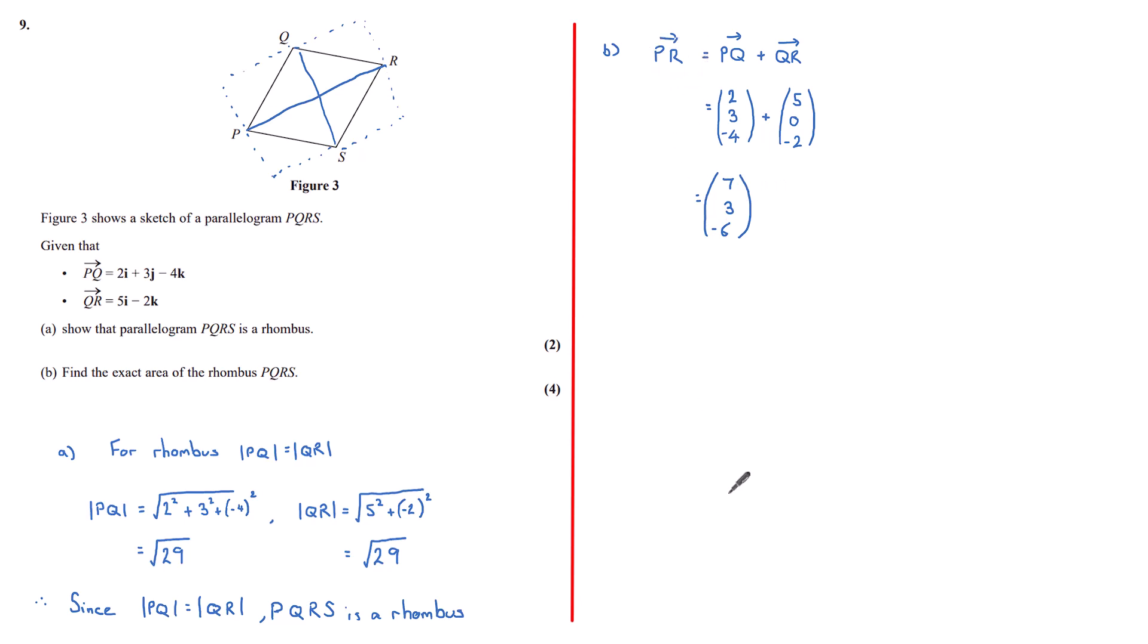This allows us to find the magnitude of PR. So that is found by doing the square root of 7 squared plus 3 squared plus minus 6 squared, which gives us a value of root 94.